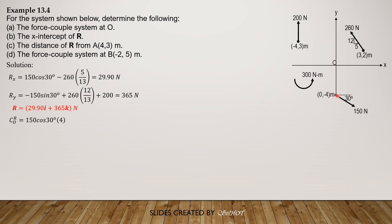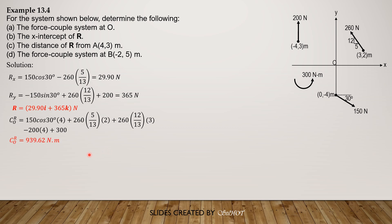For the moment about O, taking counterclockwise positive: 150 cosine 30 times 4, plus 260 times 5/13 times 2 counterclockwise, plus 260 times 12/13 times 3, minus 200 times 4, plus 300. The resultant couple about O is positive 939.62 N·m counterclockwise. Therefore the force-couple system is R equals 29.9i plus 365j newtons with this couple.